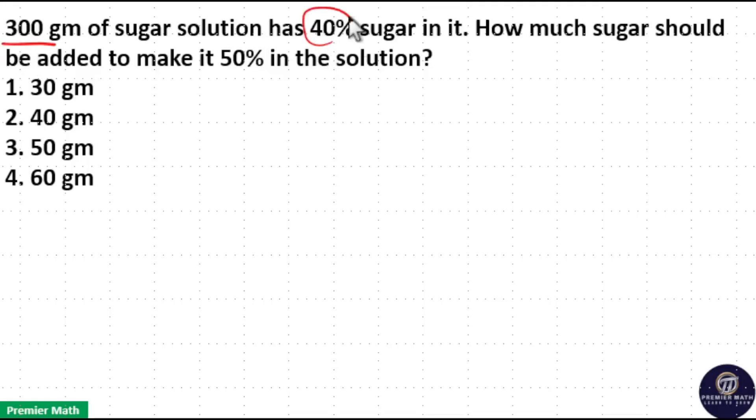300 gram sugar solution has 40% sugar in it. How much sugar should be added to make it 50% in the solution?